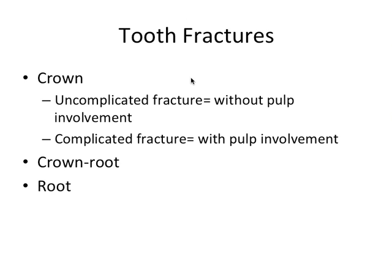Tooth fractures can be broken up into a crown fracture, a crown-root fracture, or a root fracture, depending on what part of the tooth is affected. A crown fracture can be further broken down into uncomplicated, which does not have pulp involvement, or complicated, which involves the pulp, making treatment a little bit more challenging.